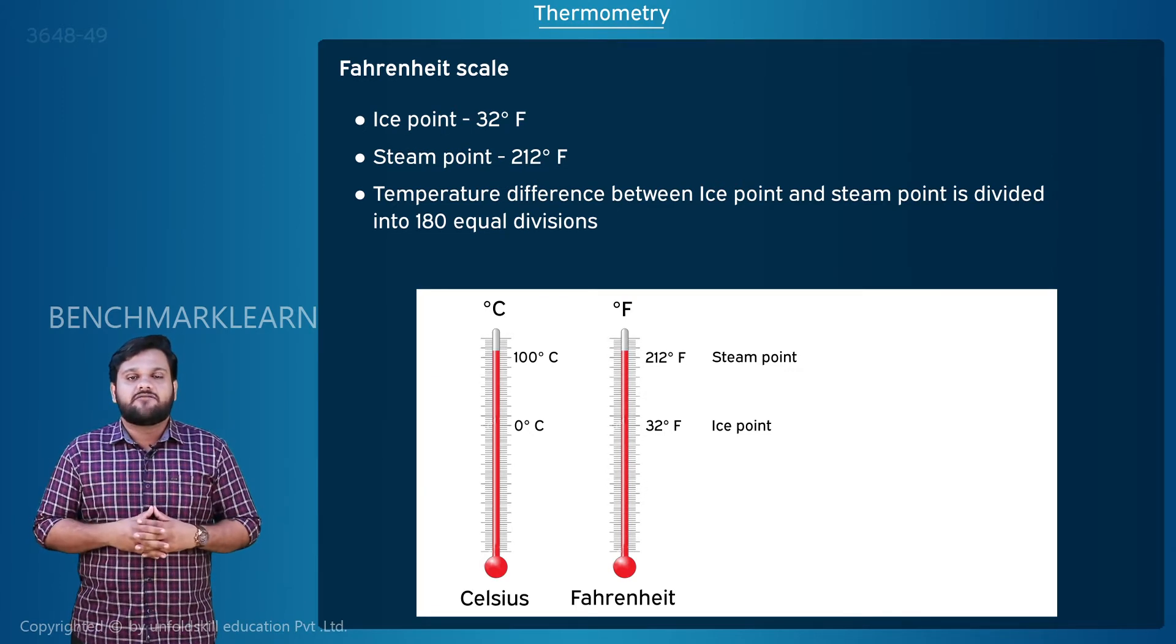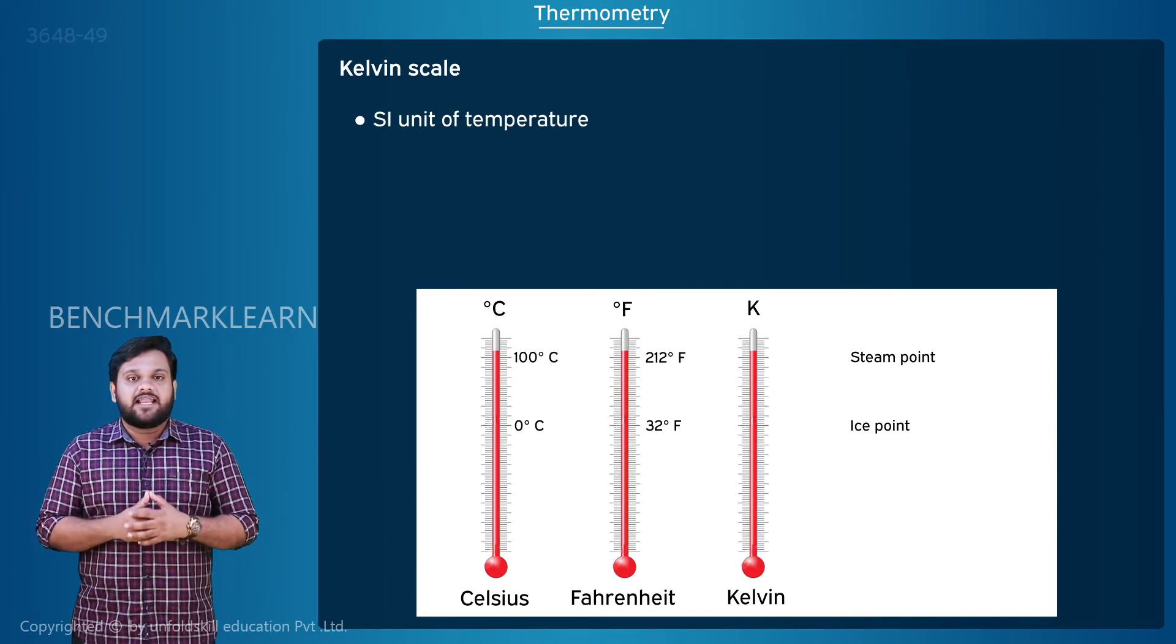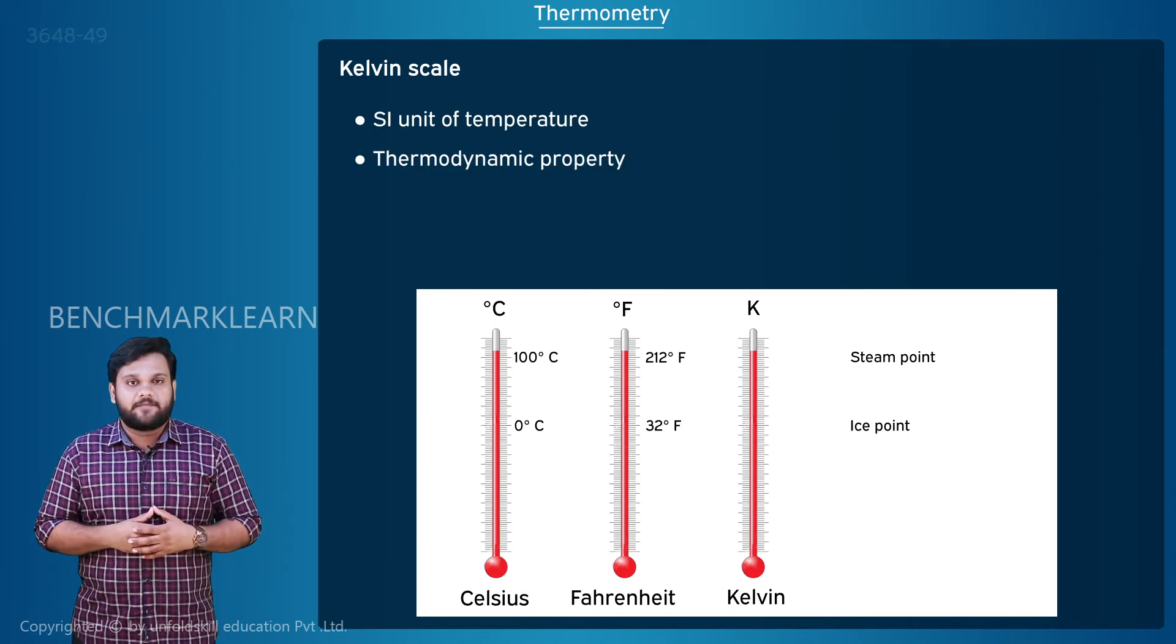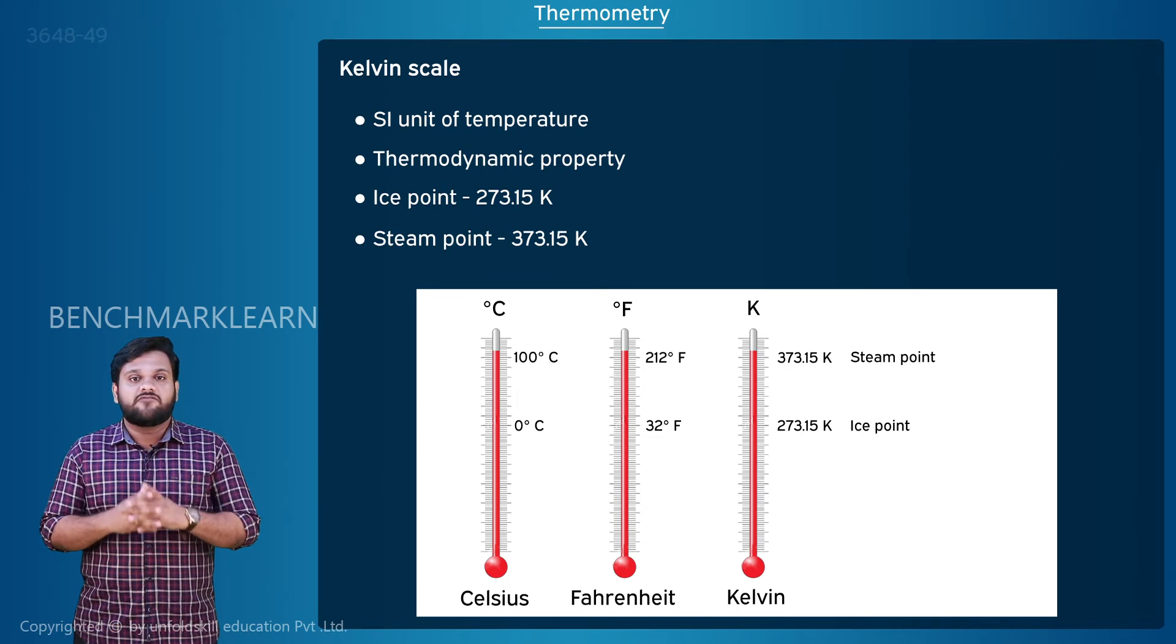But the SI unit of temperature is Kelvin. We use temperature in Kelvin scale as the thermodynamic property. Ice point is 273.15 Kelvin. Steam point is 373.15 Kelvin.